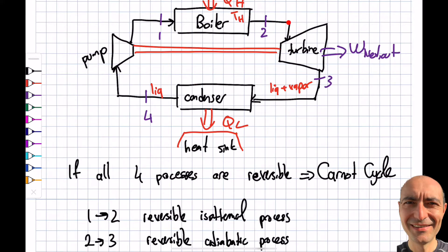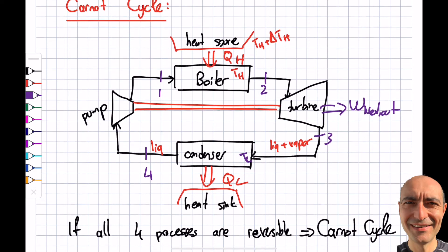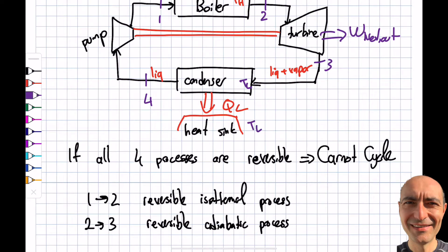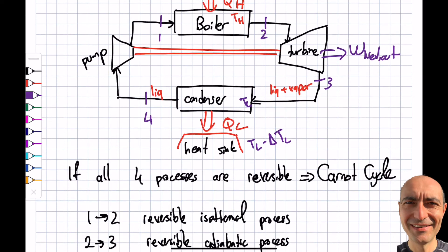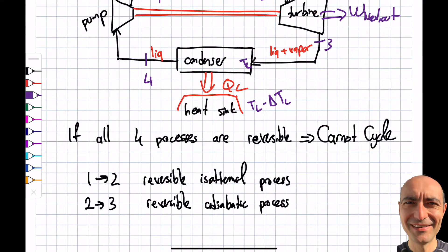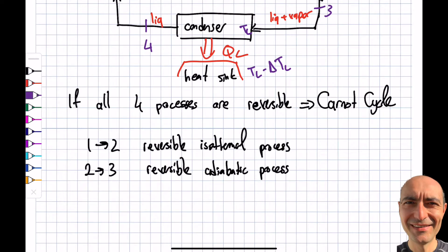The temperature of the fluid, the working fluid, decreases from TH to TL because now it's going to go into TL minus delta TL. I go from TH to TL in the turbine, that's how I extract the energy. This is different in terms of 1 to 2.